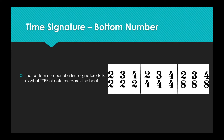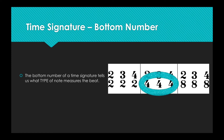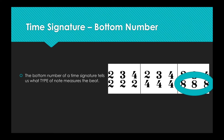Now let's look at the bottom number of the time signature. This tells us what type of note measures the beat. These time signatures have a 2 at the bottom — like the fraction one-half — which means a half note would measure the beat. These have a 4 at the bottom, like the fraction one-quarter, which means a quarter note would measure the beat. Finally, these have an 8 at the bottom, like the fraction one-eighth, which means an eighth note would measure the beat.